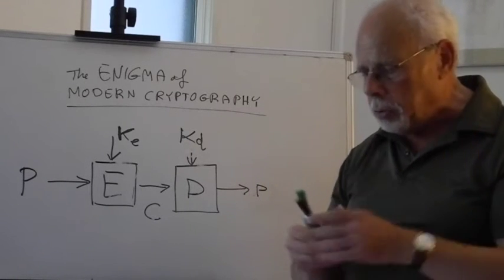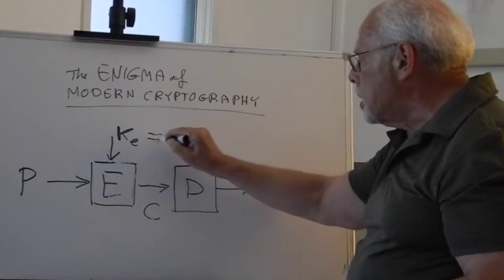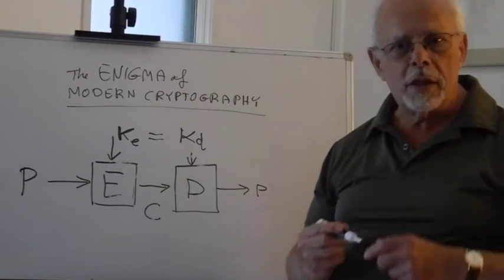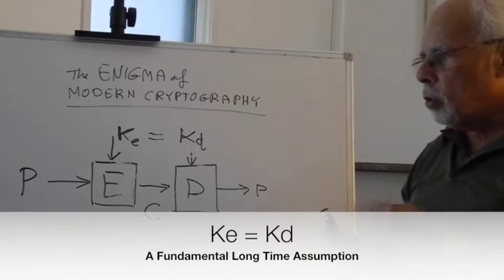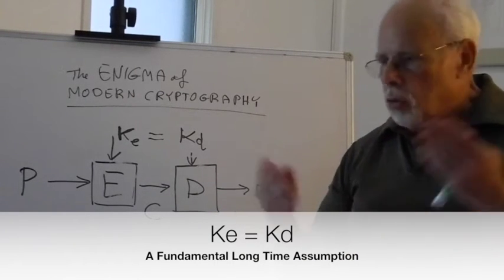That's the fact that those two keys were one and the same. You use the same key to encrypt and the same key to decrypt. One reverses the other. No question about it.